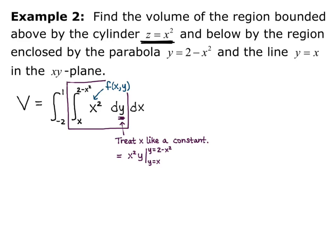Now I plug in those bounds for y. So I have x squared times 2 minus x squared minus x squared times x, so upper bound minus lower bound. And simplified, that's going to give me 2x squared minus x to the fourth minus x cubed.